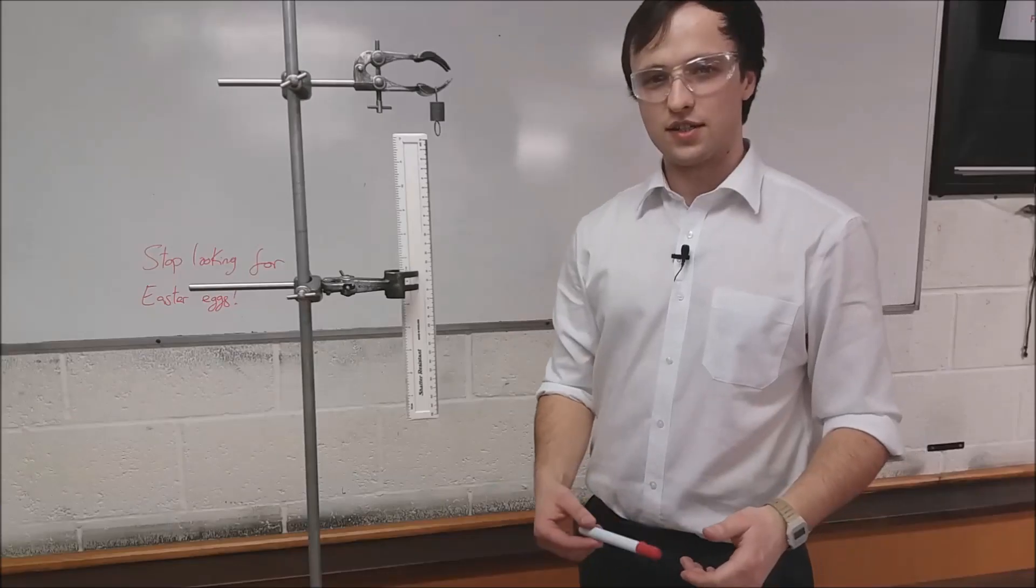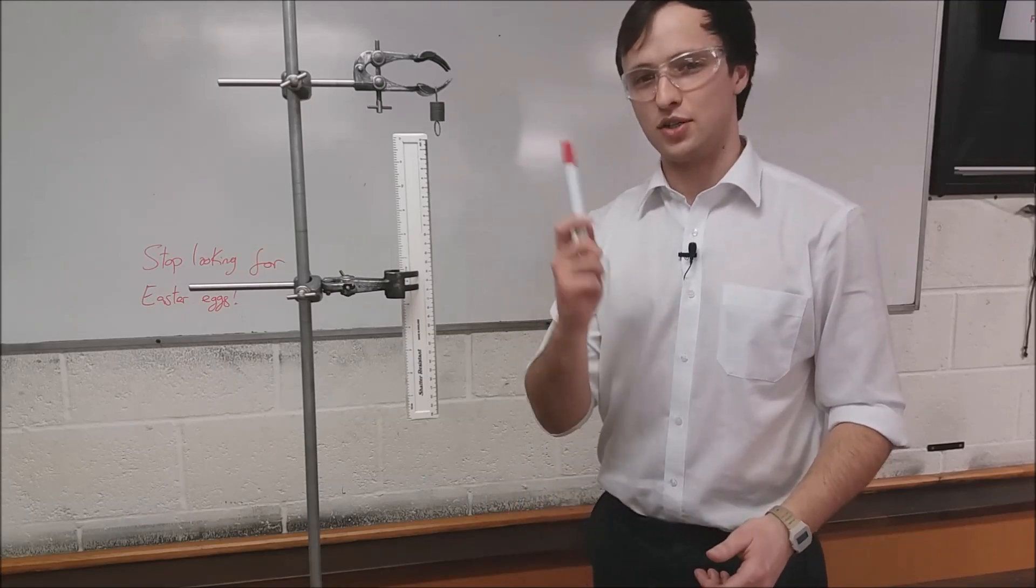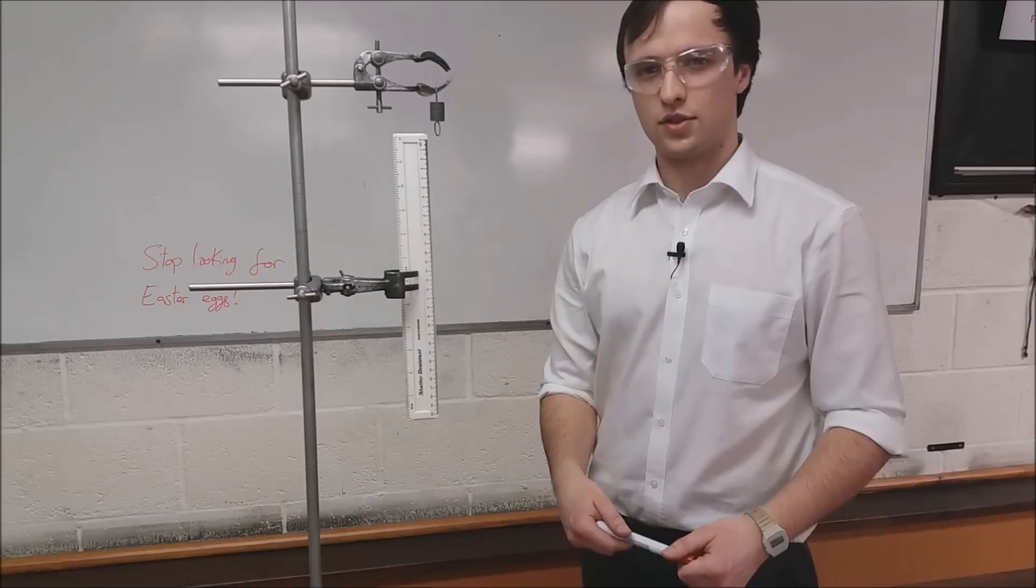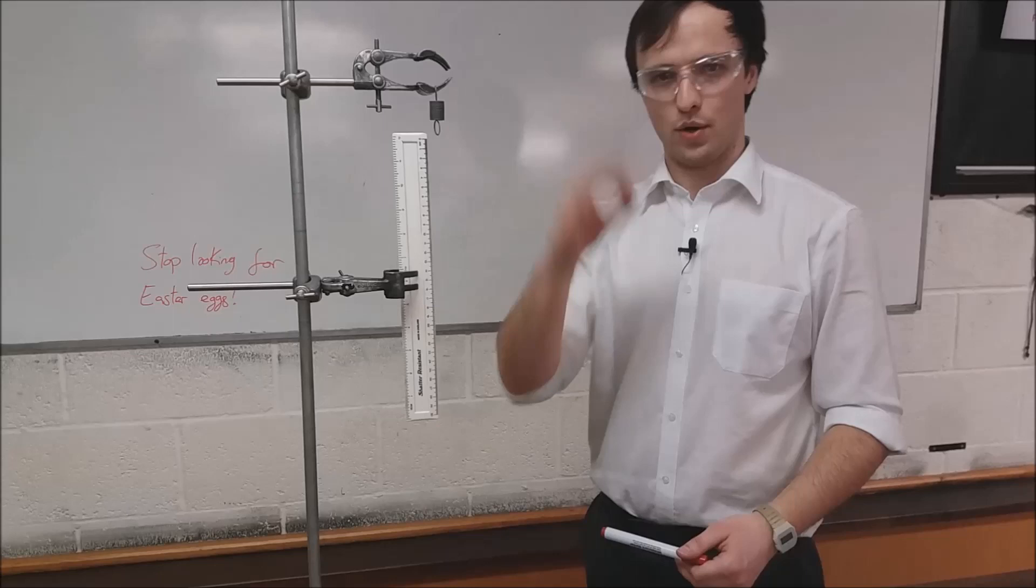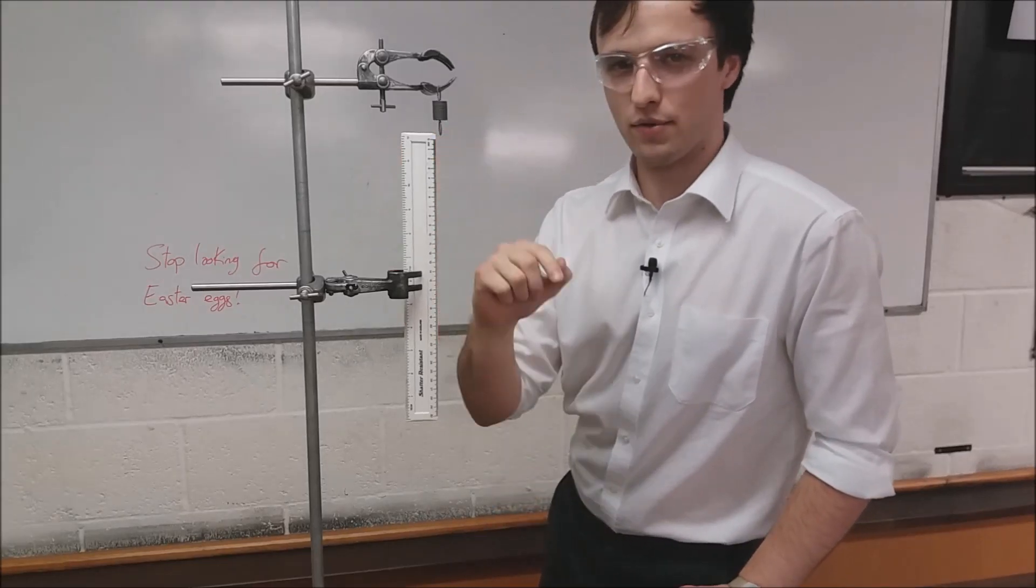We'll be getting the data for one spring first, then repeating the procedure for the second spring. We begin by putting no mass, that is, no force, on the spring, so its extension is zero. To make things easier, I've set up my equipment so the bottom of the spring is at zero on my ruler.